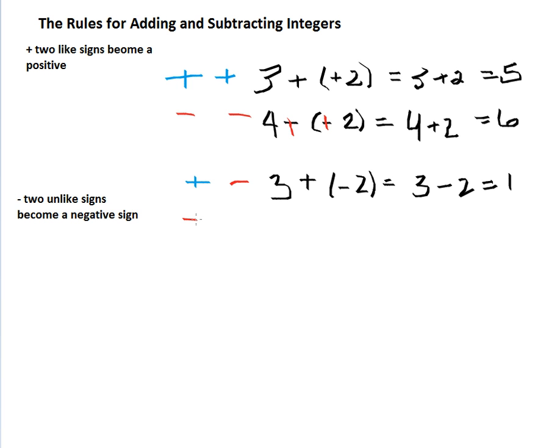Now, if we have a subtraction and we're adding a positive integer, we could have eight minus positive four equals eight minus four, which then equals four.